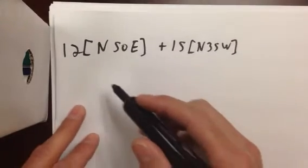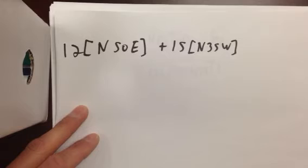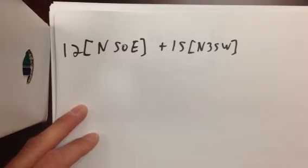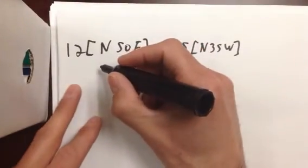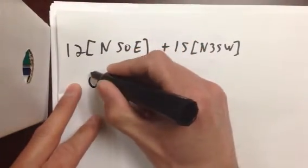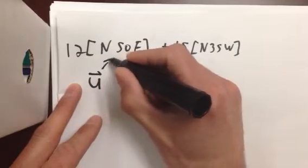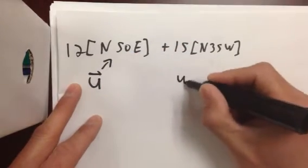So I'm going to use the same example as I did last time. I'm going to add these two vectors here. The first is 12 north 50 degrees east, and the second is 15 north 35 degrees west. And to keep things simpler, I'm going to label them. So let's call this one vector u, and we'll call this one vector w.